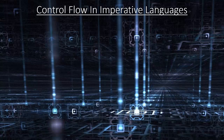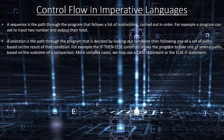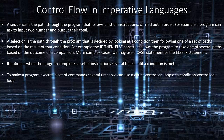Control flow in imperative languages. A sequence is the path through the program that follows a list of instructions carried out in order — for example, a program can ask to input two numbers and output their total. A selection is a path through the program described by looking at a condition and following one set of paths based on the result. The if-then-else construct allows the program to take one of several paths based on the outcome of a comparison. For more complex cases we may use a case statement or else-if statement. Iteration is when the program completes a set of instructions several times until a condition is met. We can use a count-controlled loop or a condition-controlled loop.